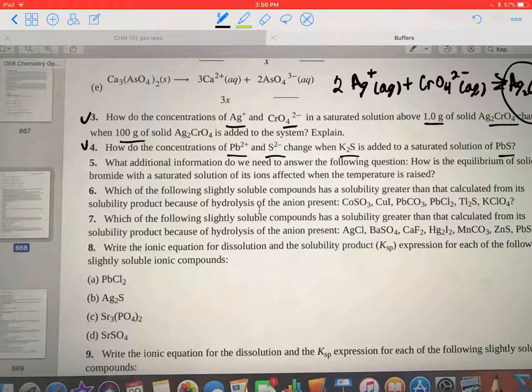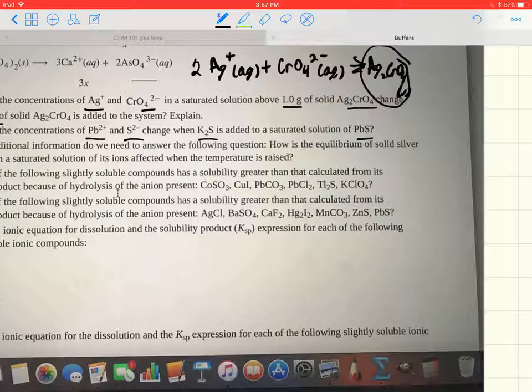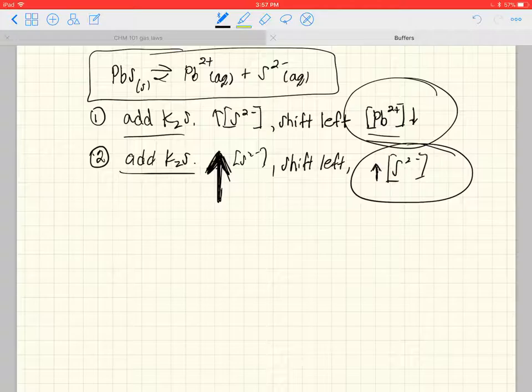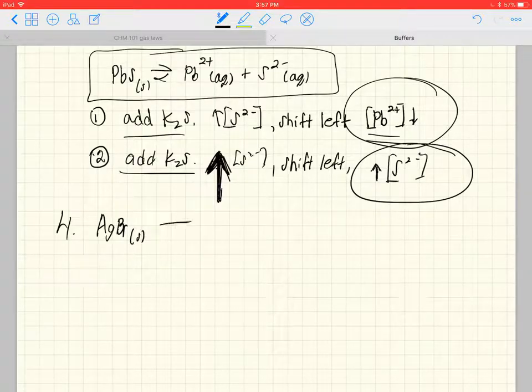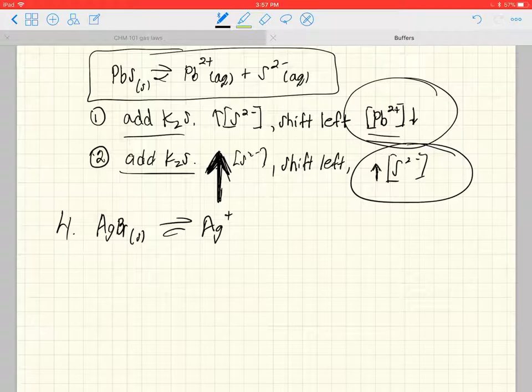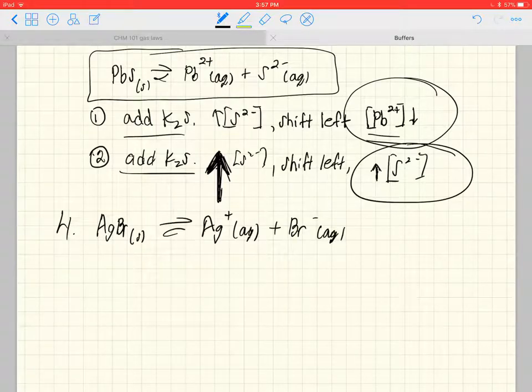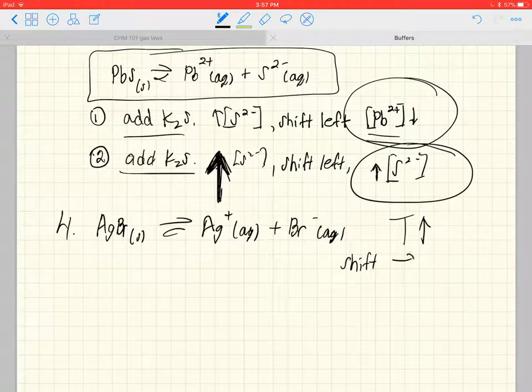Let's take a look at question five here. What additional information do we need to answer the following question: How is the equilibrium of solid silver bromide with a saturated solution of its ions affected when the temperature is raised? So let's think about that. Silver bromide (AgBr) is in equilibrium with silver ions and bromide ions.